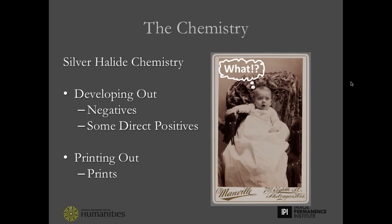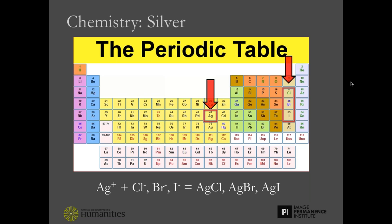Let's talk chemistry and image formation. The goal here is to help you understand the basics of silver image formation and how the way images form impacts a photograph's visual characteristics. In the 19th century, there are two kinds of silver chemistry: developing out chemistry, which is used for negatives and some direct positives, and printing out chemistry, which is used to make prints.